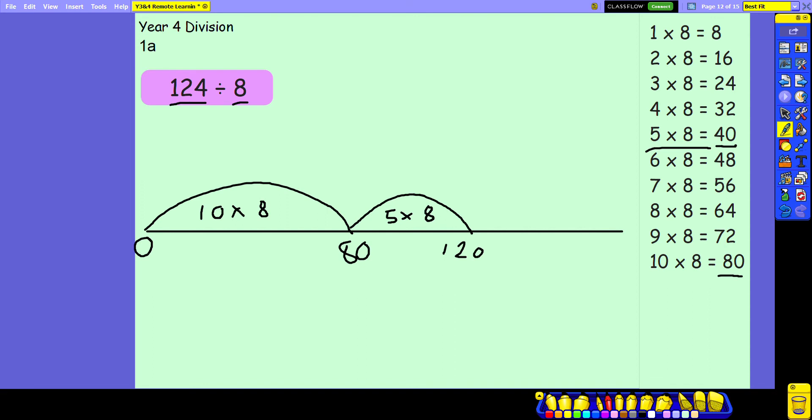It's helpful to write it in the same order so I can see that 10 lots and 5 lots I've jumped so far in 15 lots of 8.